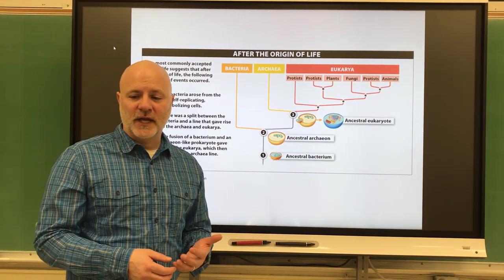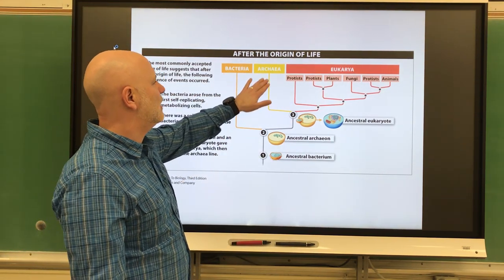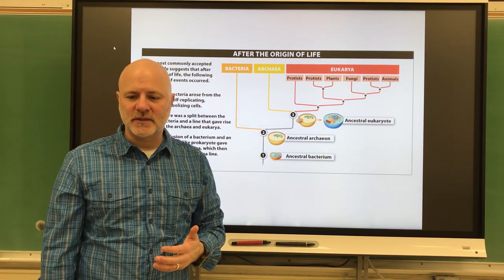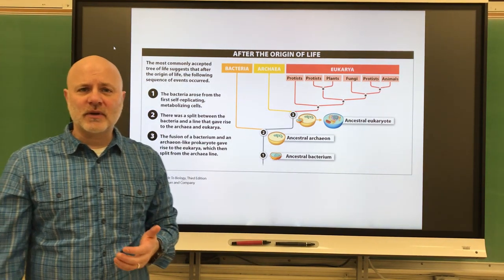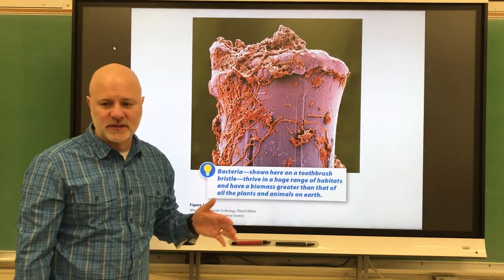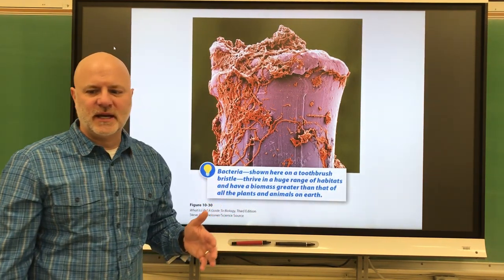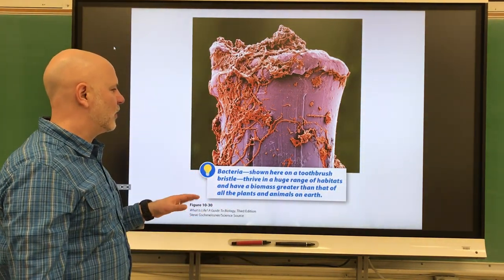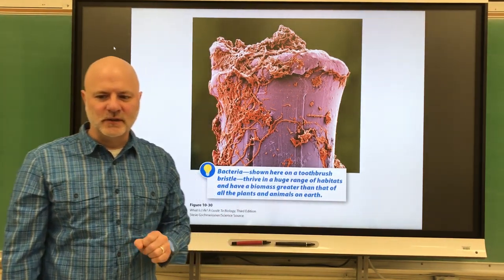Now let's look at the major categories of life. This is looking at a phylogeny showing bacteria, archaea, and eukarya — the three major domains of life. Let's take a look at bacteria. There are several kingdoms of bacteria. One of the things about bacteria is they are all single-celled organisms. They are prokaryotic cells in that they lack a nucleus, and they're literally everywhere. This is showing bacteria on a toothbrush bristle.